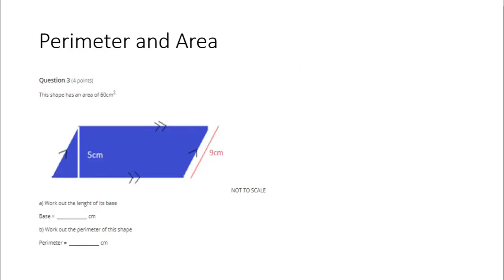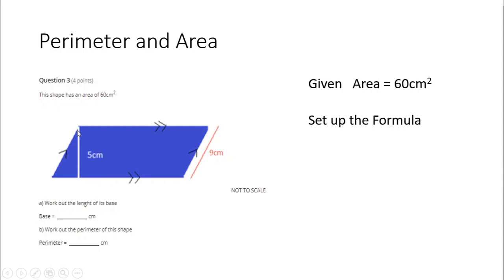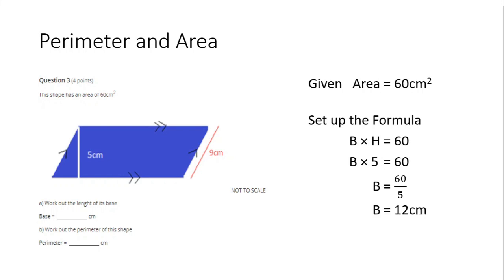Next, we're asked to find the base length of the shape given the area. When we are given a value in a question, we should consider using the formula that would calculate that value. The area of a parallelogram, much like the area of a rectangle, is base times height, and they must be perpendicular to each other. Don't get confused by the 9 centimeters — it's not going to help us. Base times height — we're told the area is 60, so that should equal 60. I don't know what my base is, but I do know the height is 5. Base times 5 should equal 60, so the base is 60 divided by 5, which is 12 centimeters.